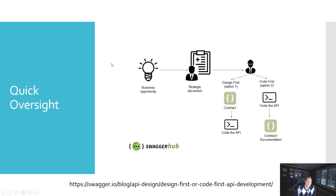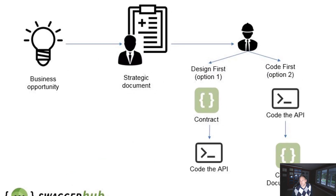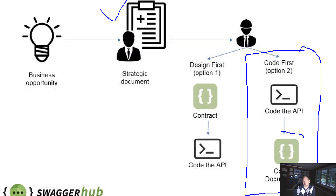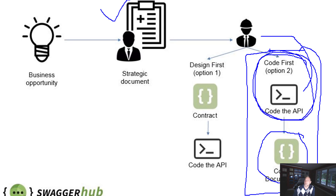Let's discuss what API-first design is. One way to build APIs is the code-first approach, which comes naturally to most people. You get a spec or directive, start coding, and then worry about the contract documentation afterward. When you build an API, it has to be discoverable — specs like OpenAPI are usually generated after the fact. And most of the time, people have not collaborated much with their clients or the people intended to use the API.